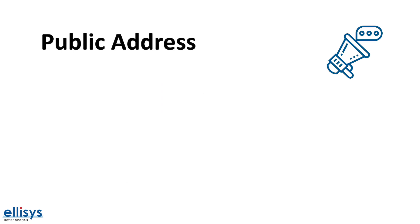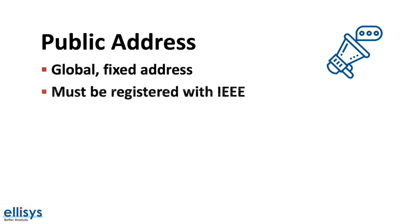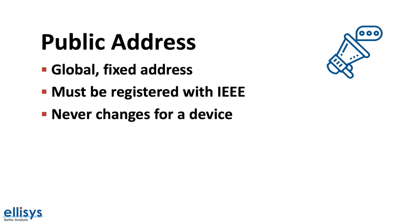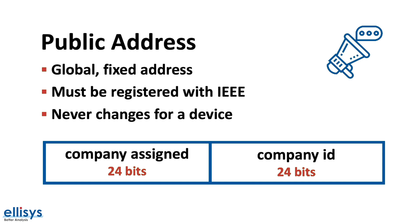First we have the public address. This is a global fixed address that must be registered with the IEEE. The address never changes and it guarantees uniqueness for a Bluetooth device. The format includes a publicly assigned company ID in the least significant 24 bits and an internally assigned ID in the most significant 24 bits.